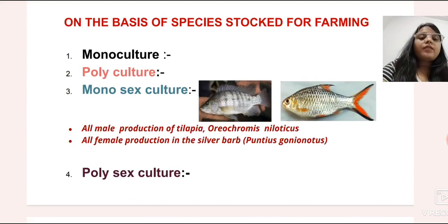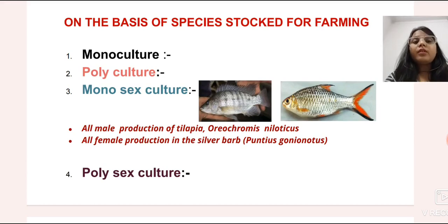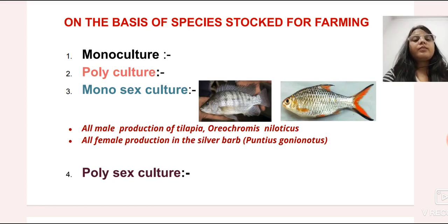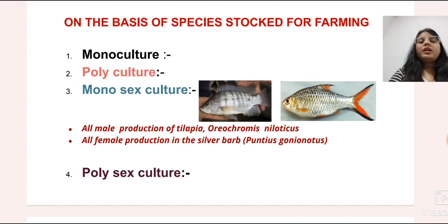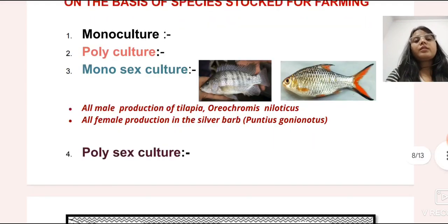The third type is monosex culture, which means culture of either all-male or all-female population in one pond. For example, culture of all-male tilapia in one pond or culture of all-female silver barb in one pond — that is called monosex culture. Polysex culture means culture of both male and female fishes in one pond — that is called polysex culture.